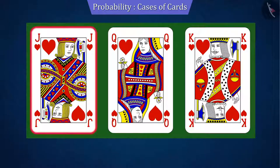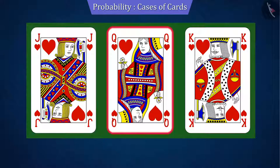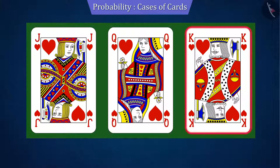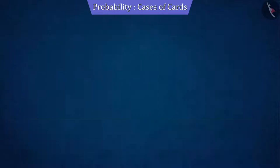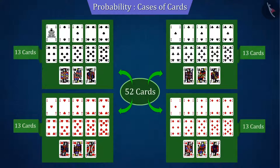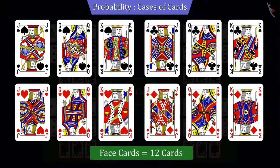The cards with jack, queen, and king are called face cards. Similarly, there are 3 face cards in each group — that is, 12 cards out of the total 52 cards are face cards.